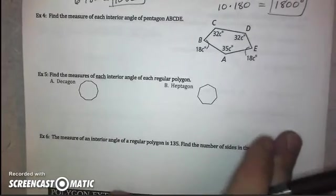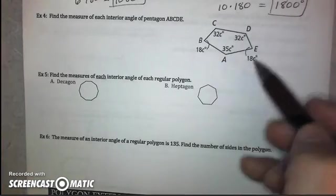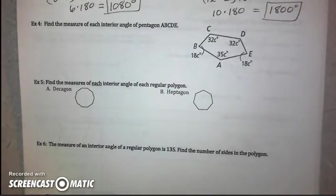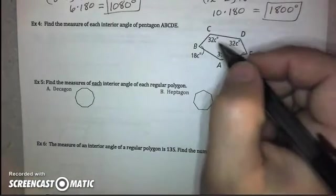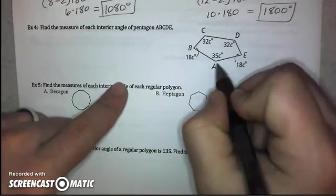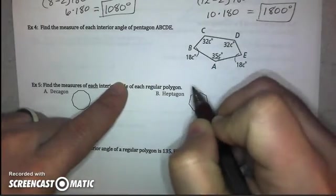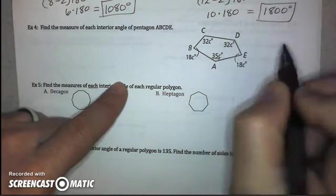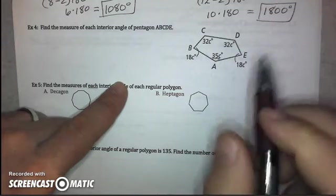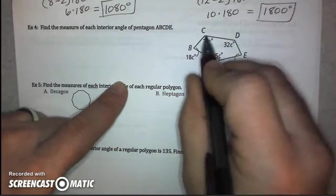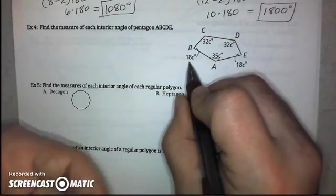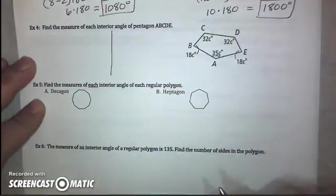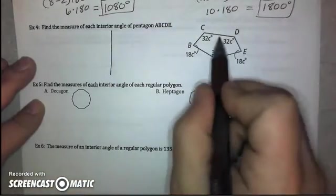For example 4, we're going to use that fact with the different expressions given for these angle measures. In example 4, we're supposed to find the measure of each interior angle of this pentagon. Now, you'll understand that angle A is expressed as 35C degrees, B is 18C, C is 32C, D is 32C, and E is 18C again. Now, in order to find what each of these equals, I need to know what C is. In order to find C, I need to be able to write an equation to be able to do that. So, there's two parts to this.